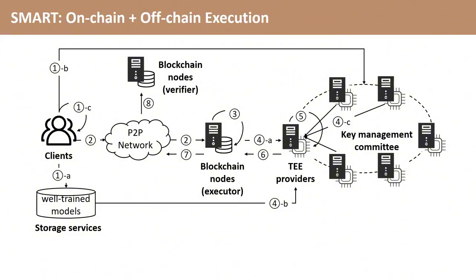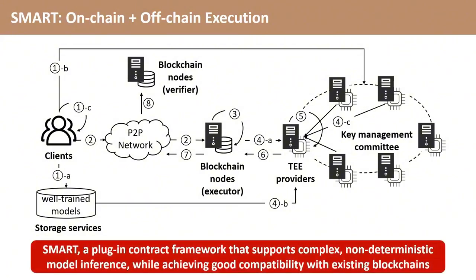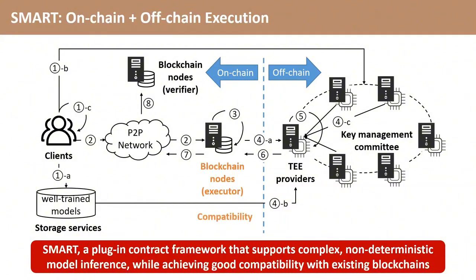In this paper, we propose SMART, a plug-in contract framework that supports complex, non-deterministic model inference while achieving good compatibility with existing blockchains. We design an on-chain and off-chain joint execution model, which leaves the deterministic code executed on-chain while outsourcing the non-deterministic model inference to off-chain nodes. The goal of preserving on-chain execution is to be compatible with existing blockchains, while the off-chain function handles the challenges of non-determinism and high complexity brought by model inference.